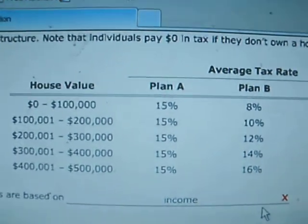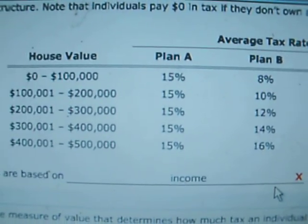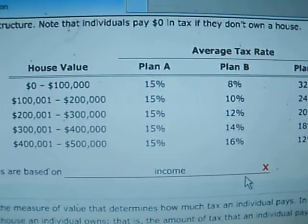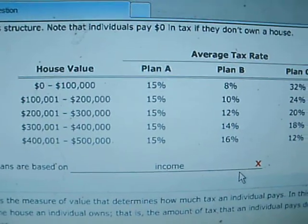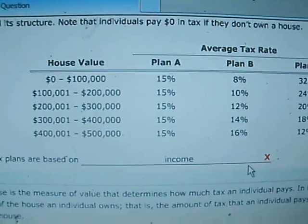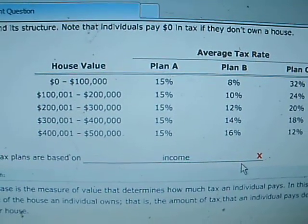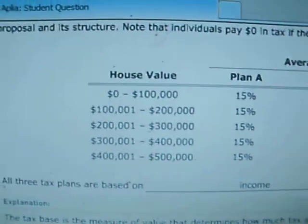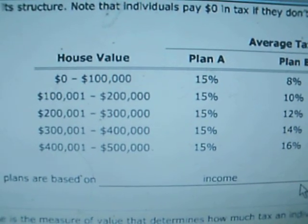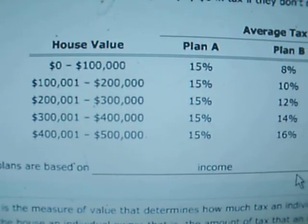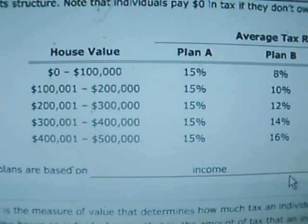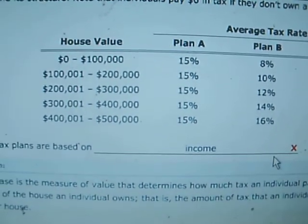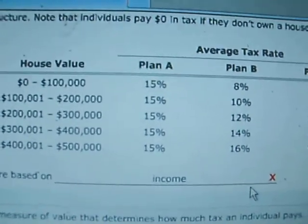If you look at Plan A, they're all the same — 15% across the board. So according to Aplia, that 15% should be changing based on the value of the house, but I'm not seeing it changing. If you don't own a house at all, you're paying 15%. If you own a house that's worth $300,000, you're still paying 15%. That does not look like the value of the house to me. That looks like something different.